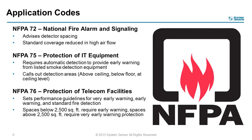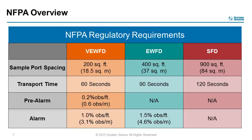NFPA 76 is geared around telecommunication facilities, and it actually has all of the detailed information as far as the definitions of these categories, their spacings, and when to implement early warning versus very early warning design. We have three different detection categories: very early warning, early warning, and standard fire detection. Depending on the actual space in the facility, you will design accordingly and follow these guidelines.